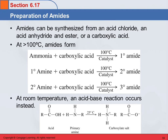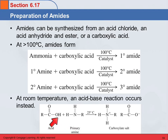What happens if we do these at room temperature? If we mix a primary amine and a carboxylic acid without the high heat and the catalyst, we just have an acid-base reaction and we end up with a carboxylate salt.